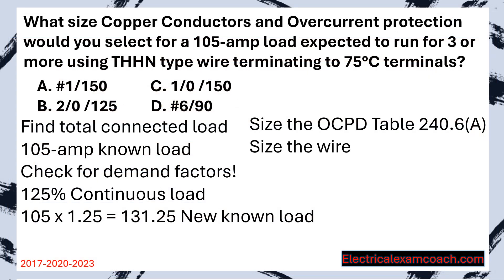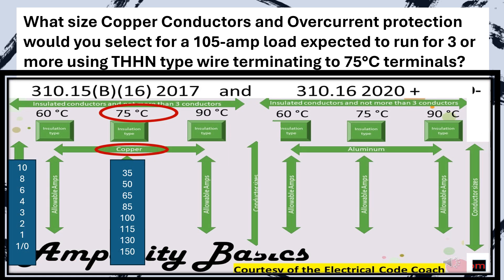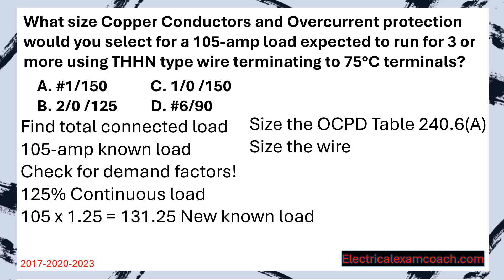Now we come back and size the wire. We head to our ampacity table on the copper side in the 75 degrees C column. We go down and find a wire that covers the known load, and we select a 1-aught on a 150 amp breaker.